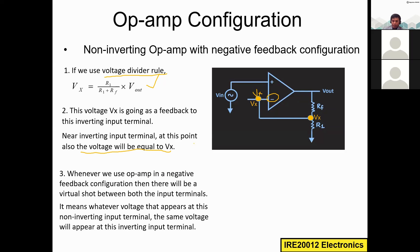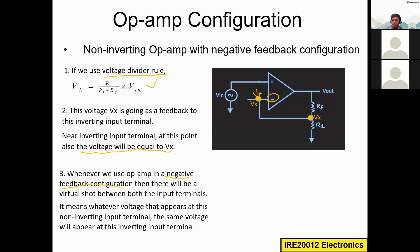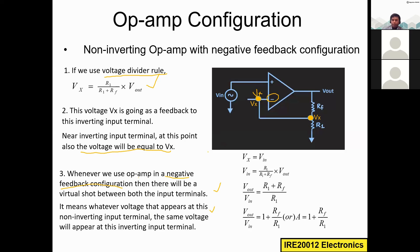Whenever we use an op-amp in a negative feedback configuration — which means taking part of the output and feeding it back to the negative input terminal — we must consider that although the two input terminals are not physically connected, they are virtually short-circuited. Whatever voltage appears at one terminal will appear at the other terminal. This is the virtual short concept, which we will use to derive the gain equation. Therefore, Vx = Vin.